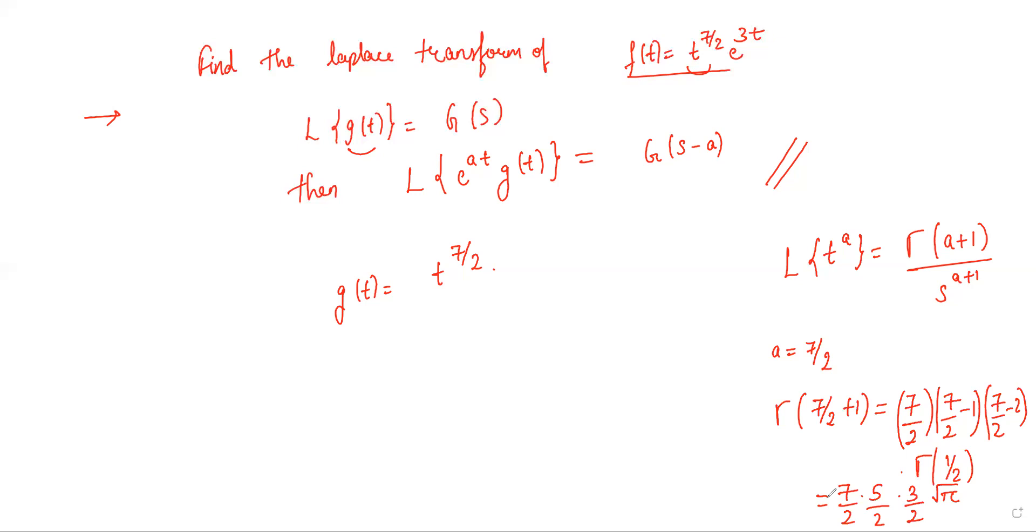So 7 times 5 is 35, 35 times 3 is 105, 105 by 8. So Laplace transform of g(t) will be 105 by 8 root pi divided by s to the power 7/2 plus 1, which is 9/2.